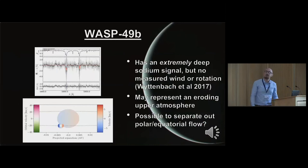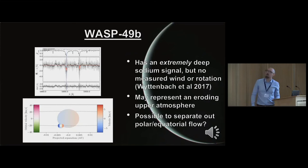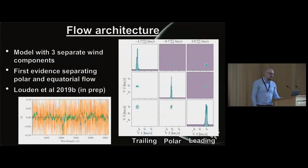I then moved on to look at another planet and try something different. WASP-49b is a good test bed because it has this enormous, extremely deep sodium signal. The atmosphere - highlighted in red and blue for the velocity field - has a radius as large as the radius of the planet itself, so it's more like an exosphere than an atmosphere. This huge feature was reported in Wyttenbach et al. 2017. The question is: can you not only separate out the equatorial jet, but also the polar regions from the equatorial regions?